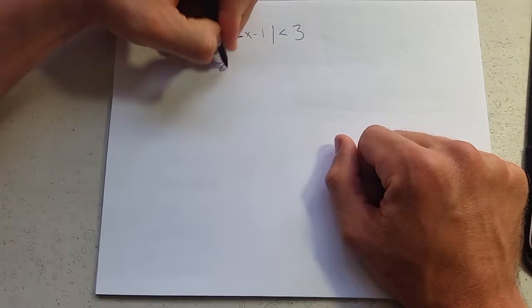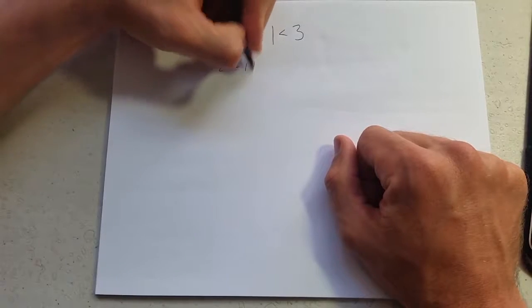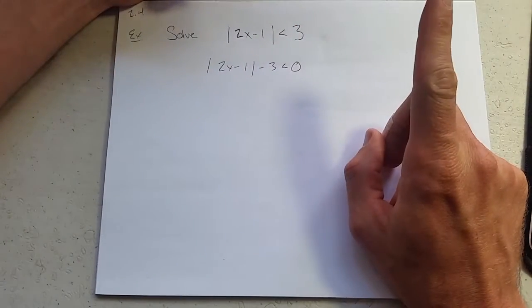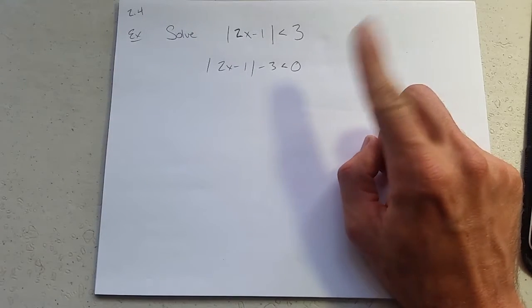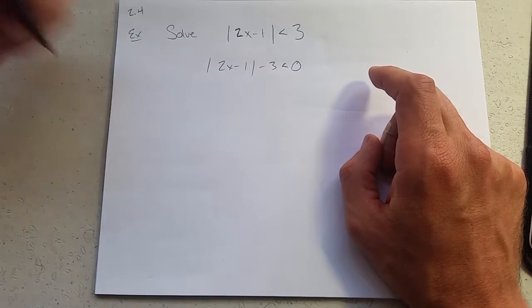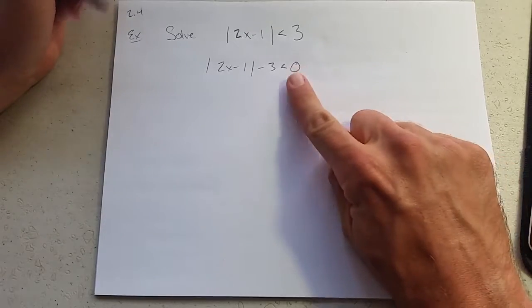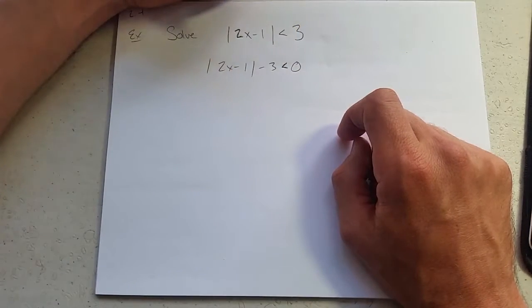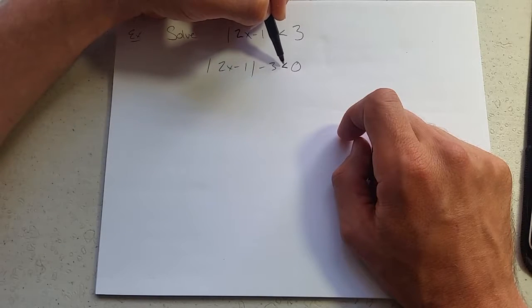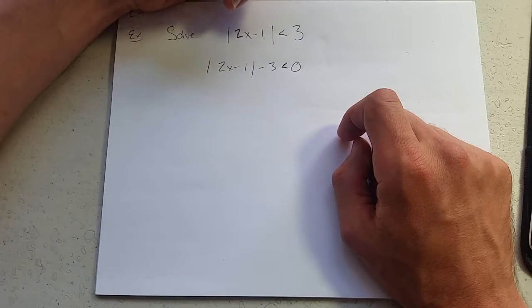So I can subtract 3 over here. There is one operation that will flip your inequality around and that operation is multiplying or dividing by a negative. That would flip your inequality. Adding and subtracting does not change your inequality. So we're completely okay to subtract 3 over here. Nothing changes.